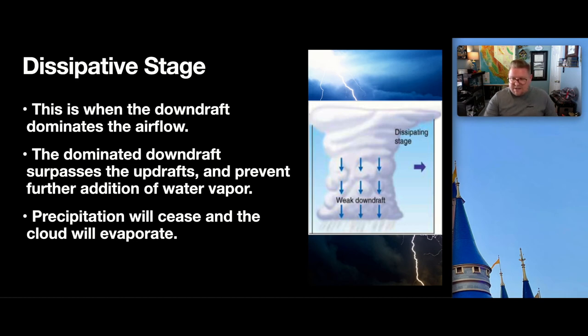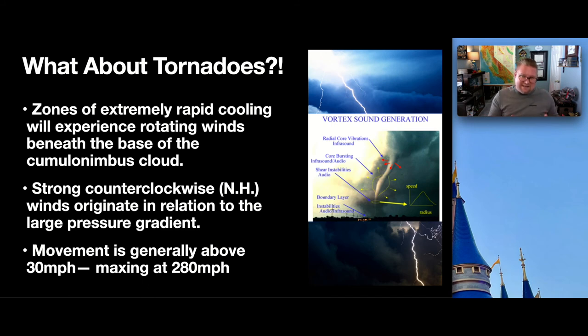So, then, the next step is, which kind of relates with this, is what about tornadoes? So, we've talked about lightning. We've talked about thunder. We've talked about large air masses and thunderstorms. So, now we get to talk about tornadoes, which is where we're going to wrap up within this presentation for you today. The tornadoes are a direct result of some of these massive thunderstorms, and we'll talk a little more about that. Zones of extremely rapid cooling will experience rotating winds beneath the base of the cloud. That rotation in the northern hemisphere is generally counterclockwise, and it will be clockwise in the southern hemisphere. And, that's due to the pressure gradient, the large difference in that pressure gradient of high and low pressure. And, the movement is between 30 to 280 miles per hour. The diagram on the right kind of shows a photo of an actual vortex or tornado, but we'll talk more about what these are.